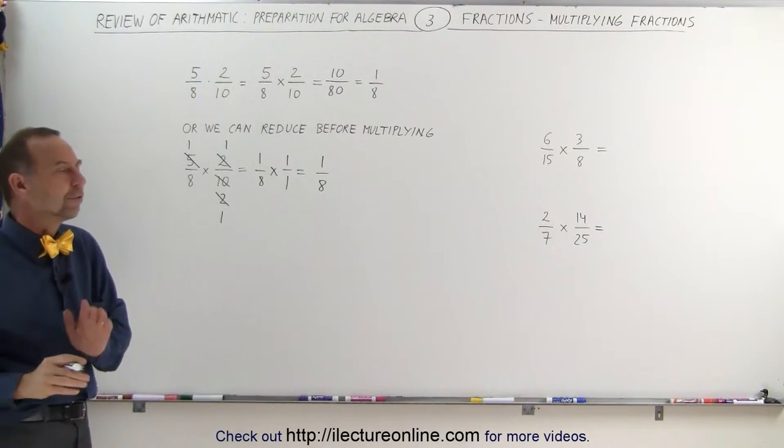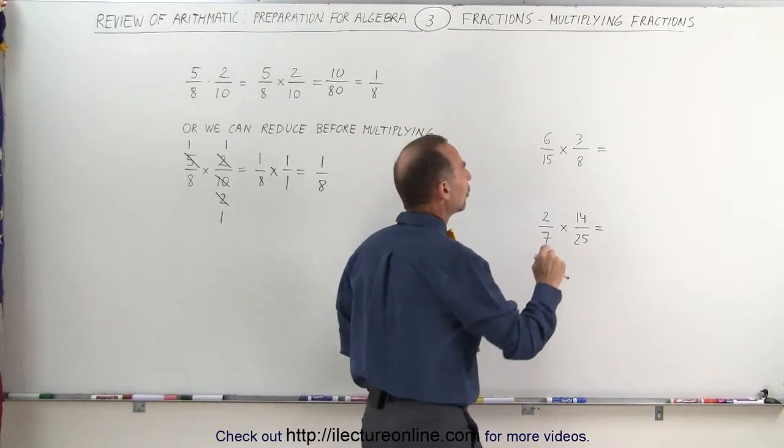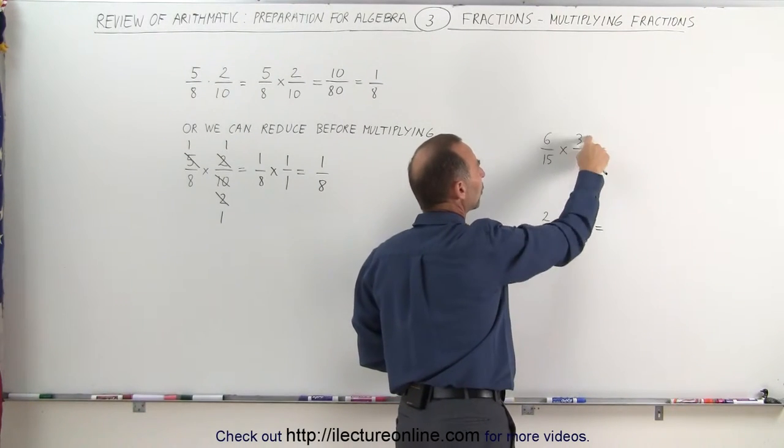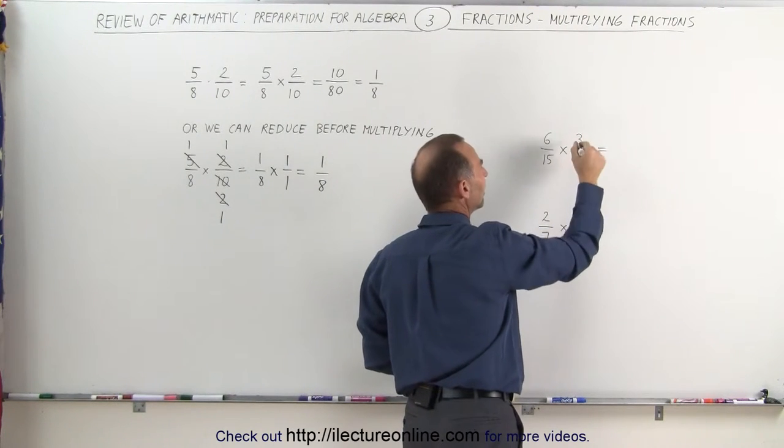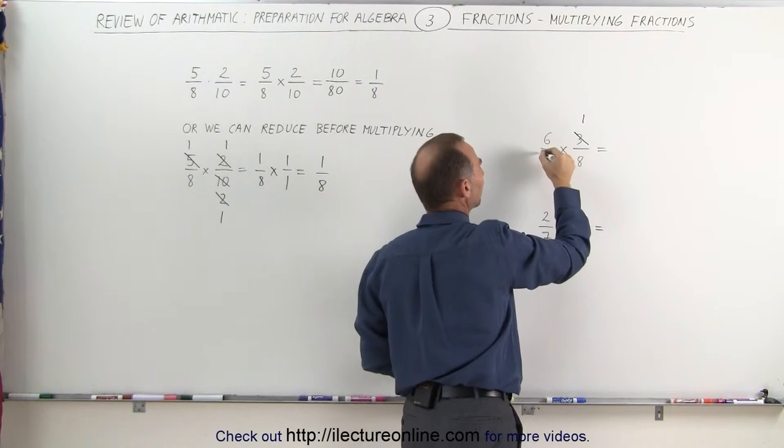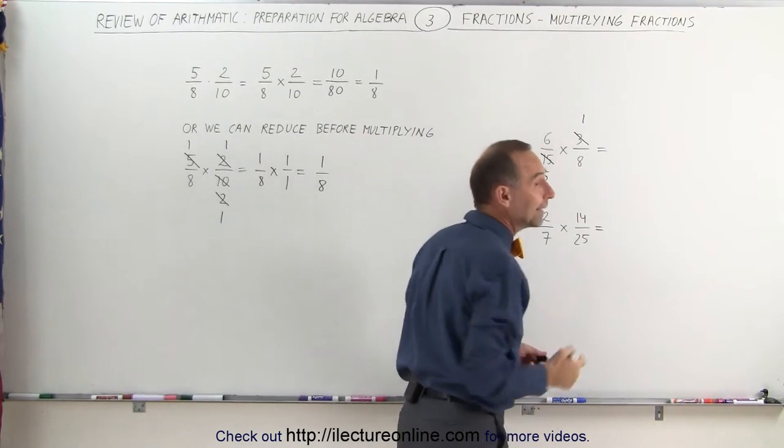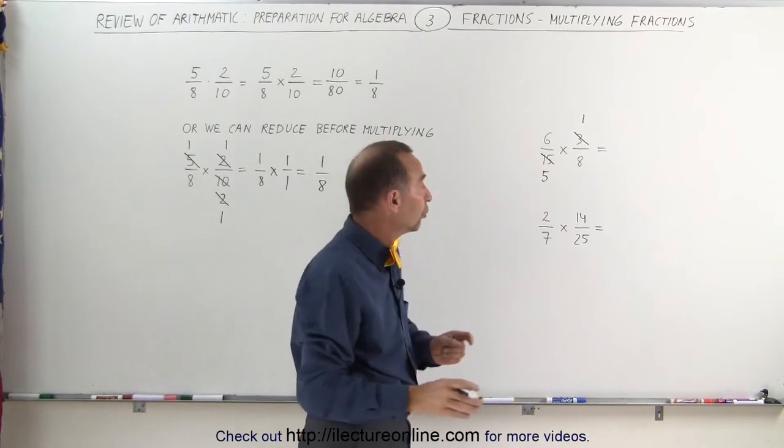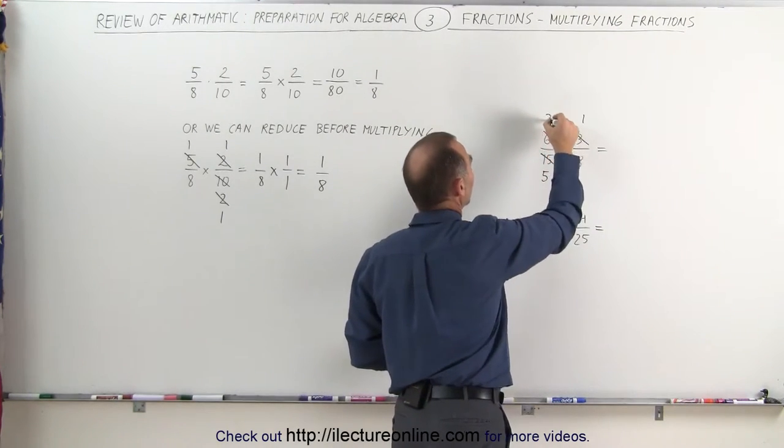So always try to reduce the fractions when you can. Looking over here, notice that the 3 and the 15 are both reducible because we can divide this by 3. We can divide this by 15. 3 divided by 3 is 1. 15 divided by 3 is equal to 5. Also we can reduce the 6 and the 8. Both are divisible by 2 because they're both even. 6 divided by 2 is equal to 3.